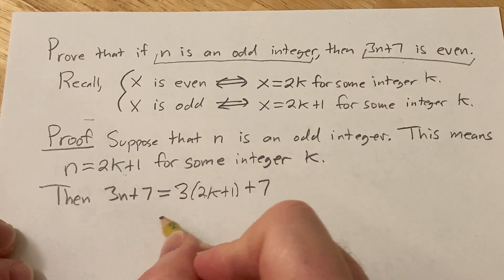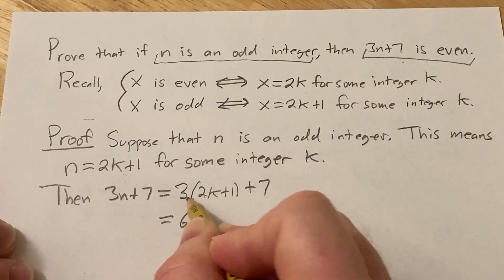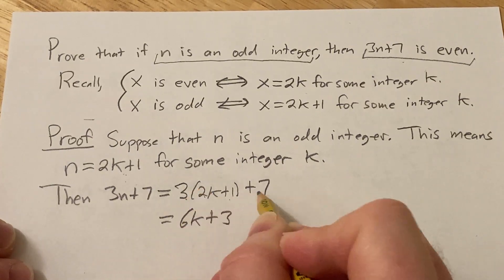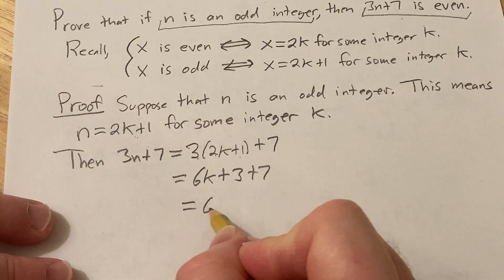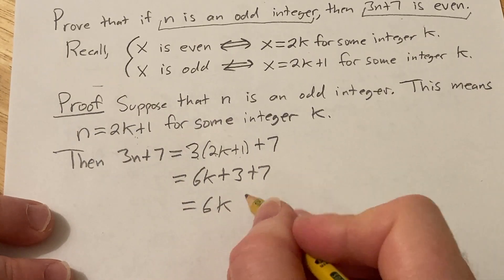Now we can distribute. 3 times 2k is 6k, 3 times 1 is 3, and then we have our plus 7 over here. So we have 6k, and 3 plus 7 is 10.